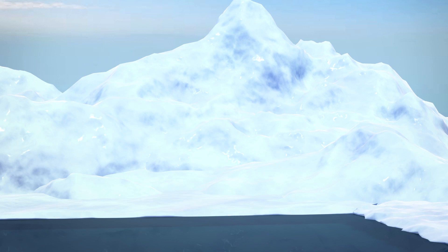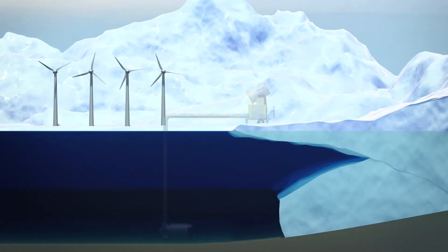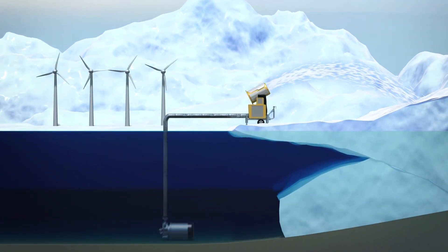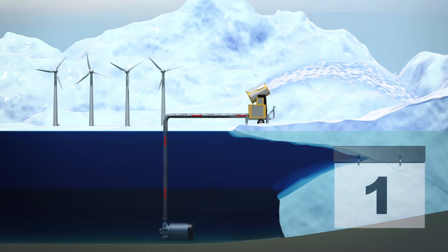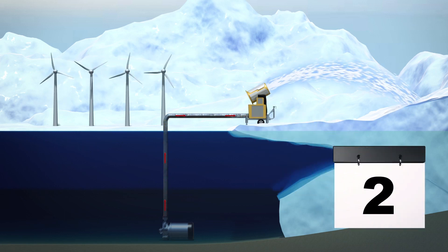To prevent this from happening, a new study published in Science Advances has proposed using 12,000 wind turbines to pump seawater to the surface, turn it into artificial snow, and then pump it onto two glaciers in the West Antarctic coast.